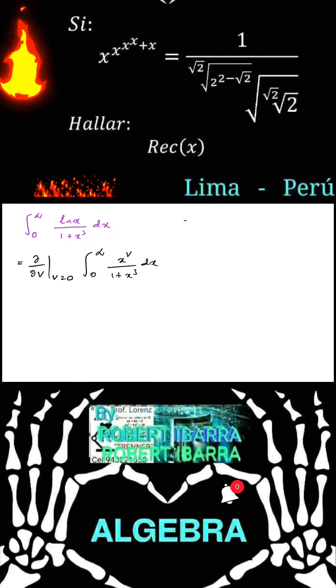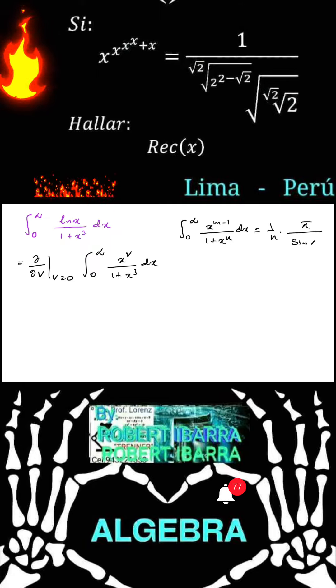Then, in a previous video, we solved this integral: integral from 0 to infinity, x to the n minus 1 over 1 plus x to the n dx is equal to 1 over n times pi over sin of pi m over n. So here we have this type of integral.